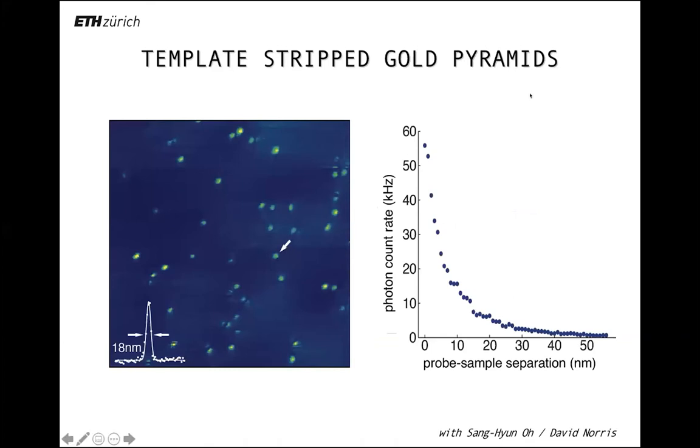Using these template-stripped gold pyramids, we routinely achieve resolutions on the order of 18 nanometers. This is an image of single molecules using fluorescence, not Raman. We scan the pyramid pixel by pixel over the sample surface, and whenever there is a molecule, we get a fluorescence signal. These different patterns also give us an indication of how these molecules are oriented. Once we position a gold pyramid over such a molecule and pull it back, this is the signal as it fades away. You see that the signal is very localized to 5 to 10 nanometers, and this is what enables the spatial resolution.